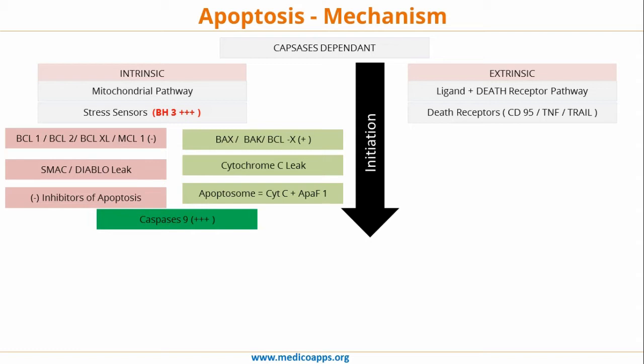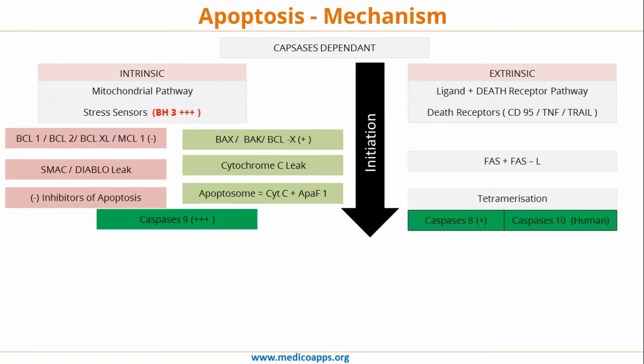Once the intrinsic pathway is activated, it finally leads to the activation of caspase 9 — so the intrinsic pathway initiation phase ends with activation of caspase 9. In the extrinsic pathway, FAS and FAS ligand undergo tetramerization, which leads to the activation of caspase 8 or caspase 10 in humans. So, the intrinsic pathway leads to caspase 9, and the extrinsic pathway leads to caspase 8 or caspase 10.